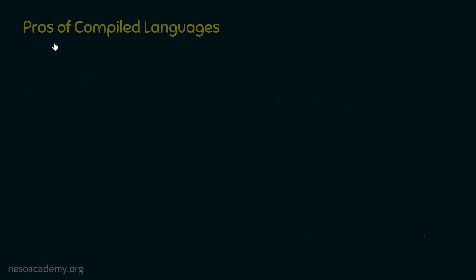We'll first discuss the pros of compiled languages. The first advantage is private code. Compiled languages are always compiled, meaning the code must be provided to a compiler and then we get an executable. If someone wants to run our code, we just need to provide that executable to them. There is no need to provide the source code, which means your code is private.